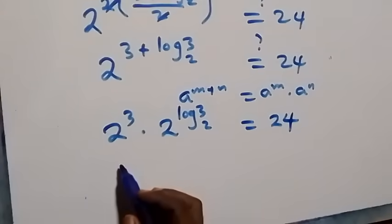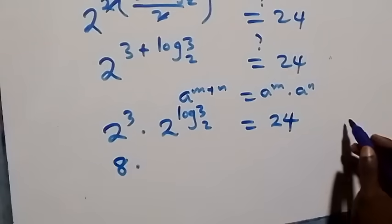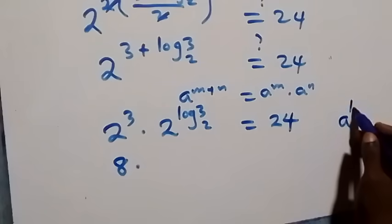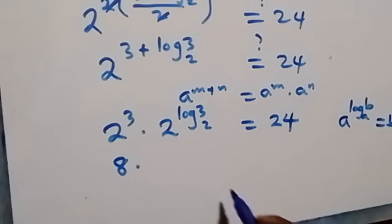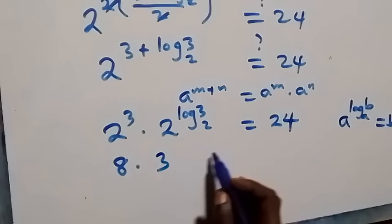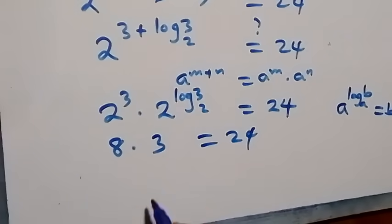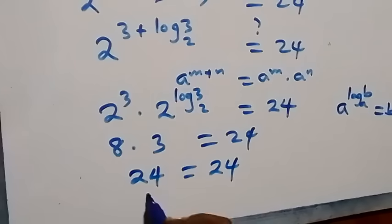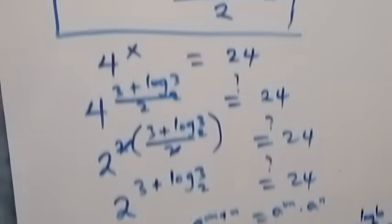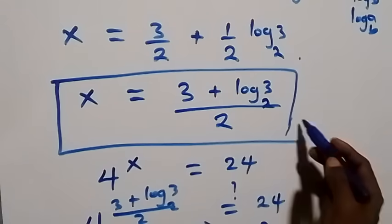Now 2 cubed equals 8. For 2 raised to power log₂3, we apply the identity a raised to power log_a(b) equals b, so this equals 3. Therefore 8 times 3 equals 24, which equals 24. Left hand side equals right hand side, confirming that x equals (3 plus log 3 base 2) over 2 satisfies the given problem.